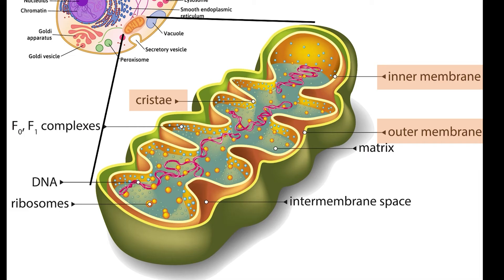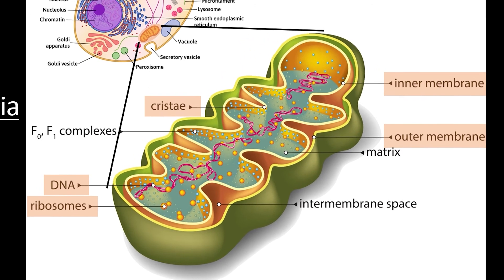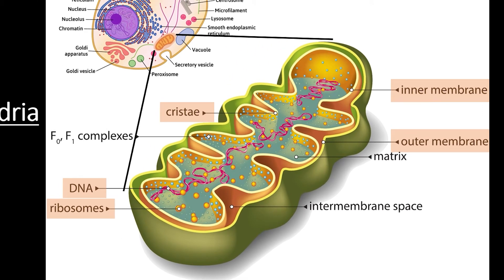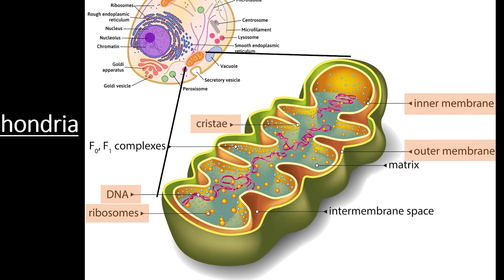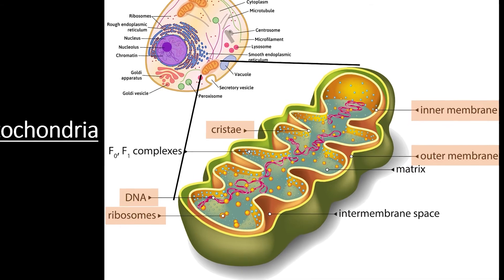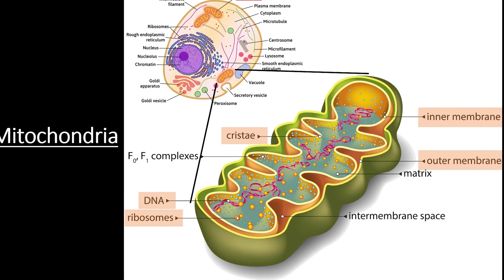Mitochondria also have their own DNA and ribosomes, which create the proteins needed to produce ATP energy. With these components, mitochondria provide energy for all eukaryotic cells — plants, animals, and single-celled eukaryotes alike.